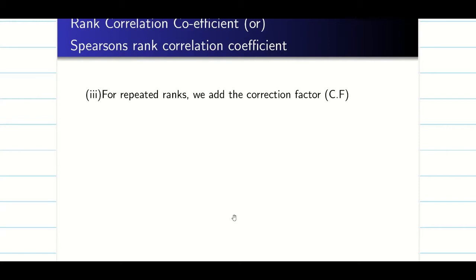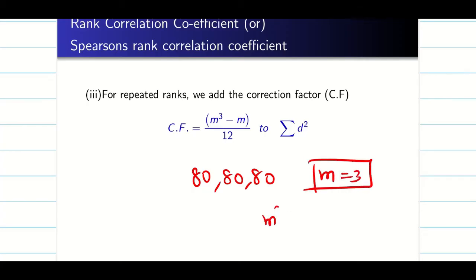The correction factor we mention as cf. Now if the rank is repeated three times, for example 80 is repeated thrice, I am going to take m = 3 and use the formula (m³ - m)/12 to find the correction factor.